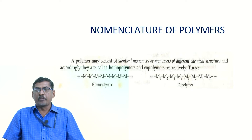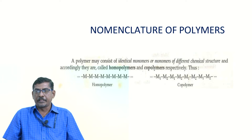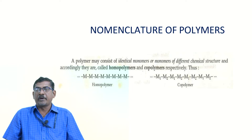If two monomers are involved in the polymer reaction to form a bigger molecule, it is called a copolymer. M1 is one monomer and M2 is another monomer; for example, M1 is ethylene and M2 is styrene, arranged alternately. Different types of monomers present in the polymer give a copolymer, while only one type of monomer gives a homopolymer.